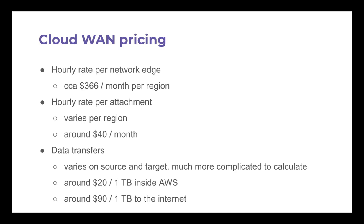The last cost component is data transfer, which varies by source and destination. Simplified: about $20 per terabyte staying inside AWS, less if you stay within a region, more if you transfer cross-region, and about $90 per terabyte to the internet. The remote access VPN for users is kind of pricey, but the alternative cloud service we had before was horrible, so we built it ourselves. And users don't transfer that much data, so it's not that bad.